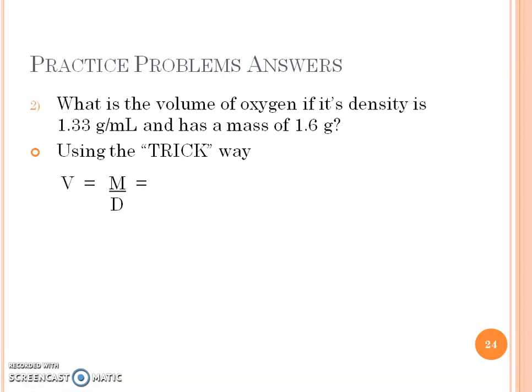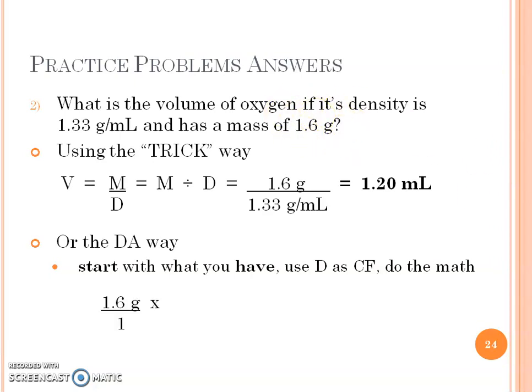Number two. The trick way - if we cover up volume on our little pie, it's mass divided by density. I'm going to take my mass divided by density, take my two numbers, divide them out, and you should get that for your answer. The dimensional analysis way, I'm going to start with my 1.6 grams over one. I'm going to use density as a conversion again, but now I'm going to flip it. My grams number has to be on the bottom. Remember, 1.33 grams per one milliliter. In this case, the grams has to go on the bottom to cancel out. I do the mathematics and I get the same answer. Number and unit.